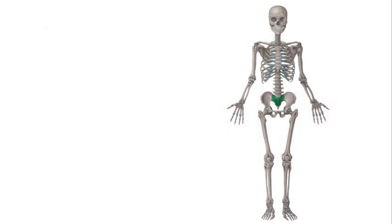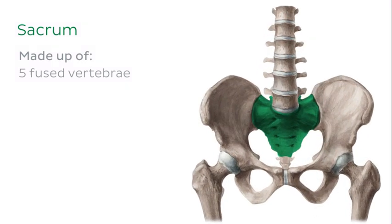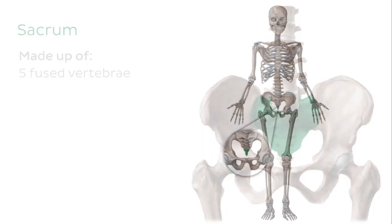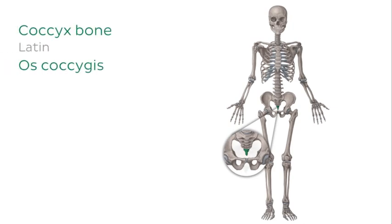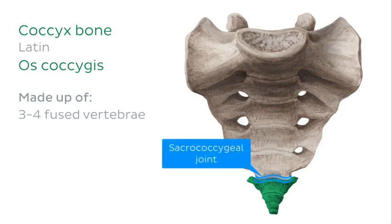We also have some fused vertebrae. The sacrum is actually made up of five fused sacral vertebrae and is located at the base of the spine. This irregularly shaped bone forms a link between the spine and the pelvic bones via the sacroiliac joints. At the distal end of the sacrum is the coccyx, which is made up of three to four fused coccygeal vertebrae and is connected to the sacrum via the sacrococcygeal joint.